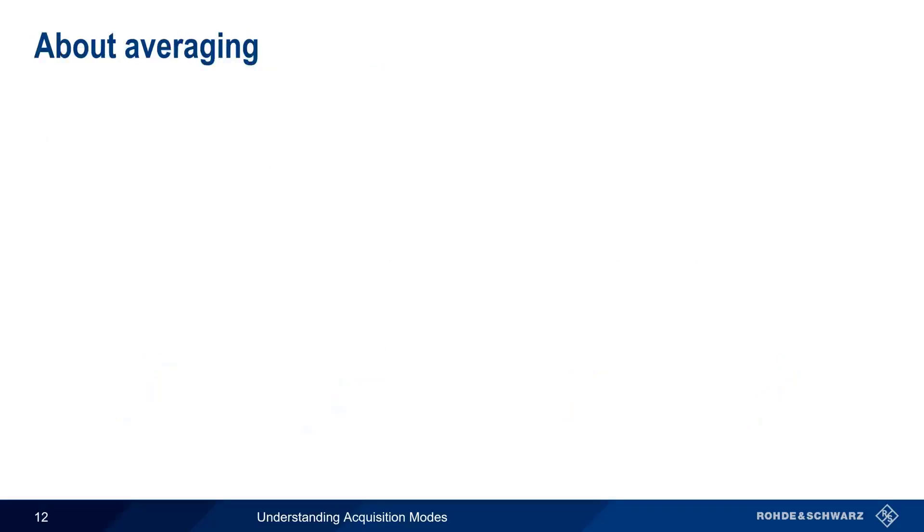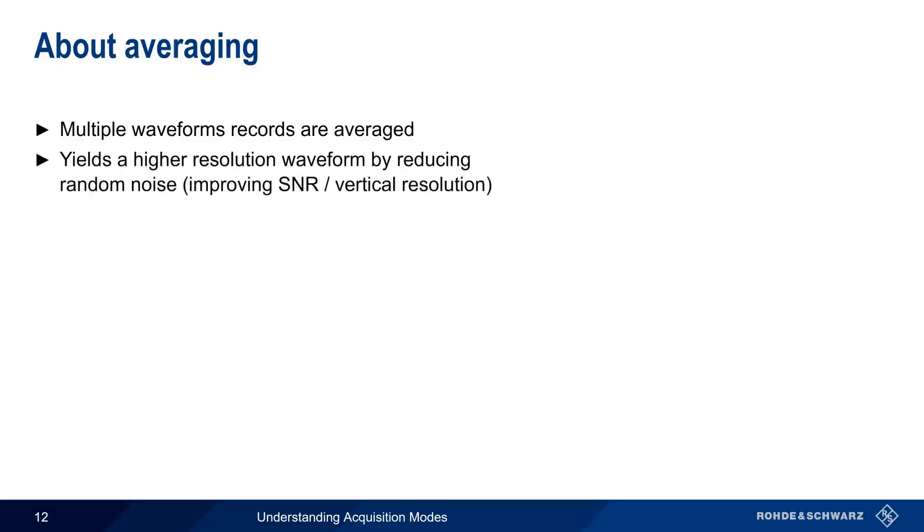As the name implies, averaging averages the waveform points of multiple sequential acquisitions. The advantage of averaging is that it can greatly reduce random noise and thus increase signal-to-noise ratio and vertical resolution. The more waveforms that are averaged together, the greater the noise reduction.